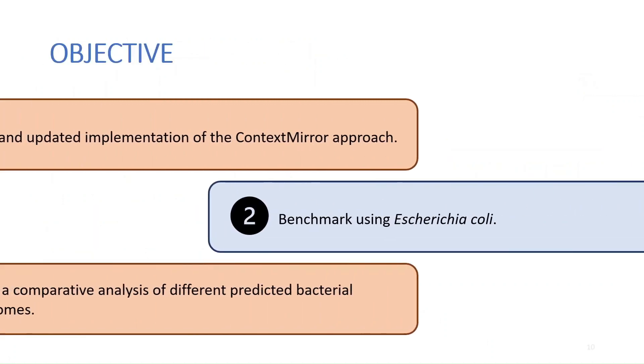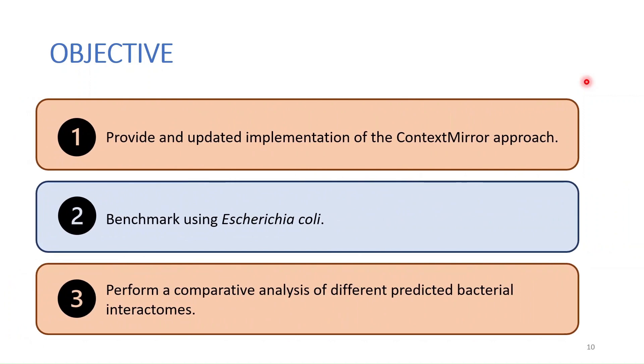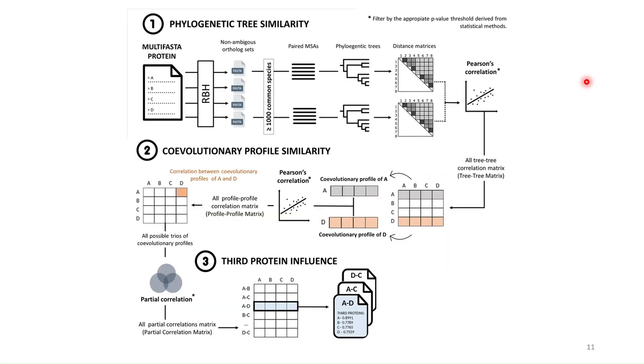So with this in mind we thought maybe we can provide an updated implementation of this method, benchmark it using Escherichia coli, and then perform a comparative analysis on different bacterial species. This would be the overall pipeline that we developed for this method. It is divided into three steps and we will go step by step to see how it works.